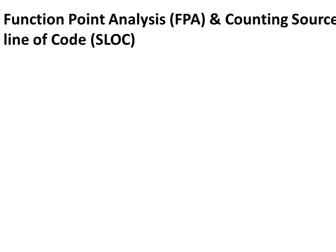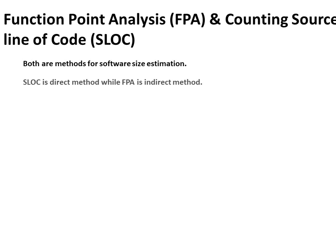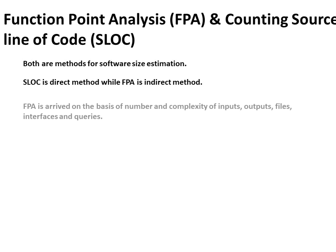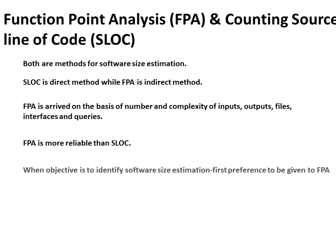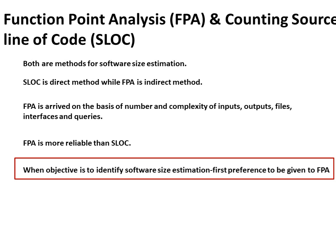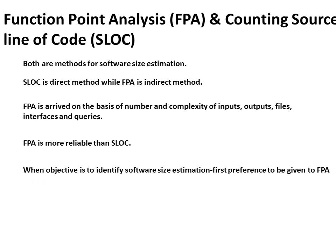FPA and SLOC are both important from the CISA exam point of view — both are methods for software size estimation. SLOC is the direct method while FPA is the indirect method. FPA is derived based on the number and complexity of inputs, outputs, files, interfaces, and queries. FPA is more reliable than SLOC, especially for complex programs or projects, so it should be the first preference for software size estimation.